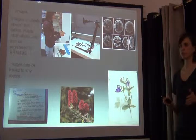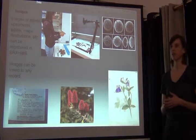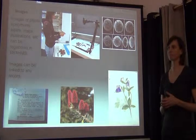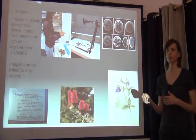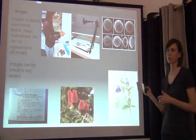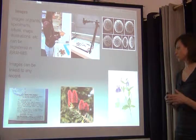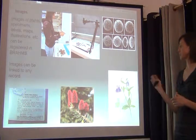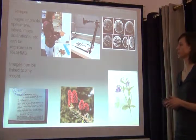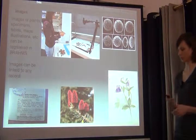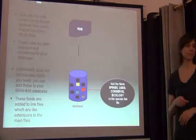For images, you're not restricted to any single image type in Brahms. You can have living plant images, SEM images, multiple images, label data, literature — anything can be linked to a specimen or taxon record.